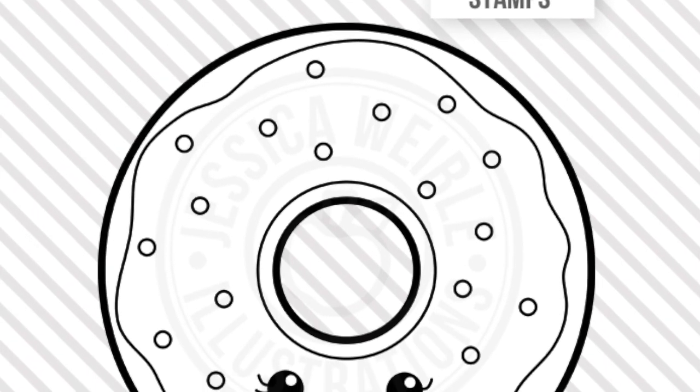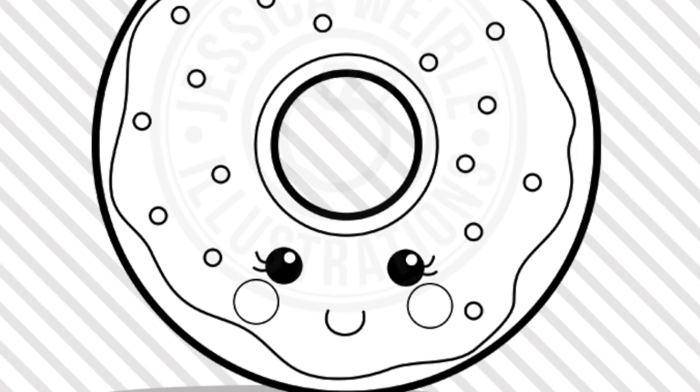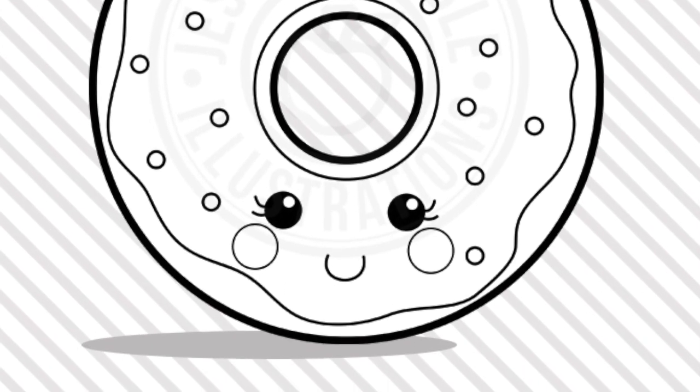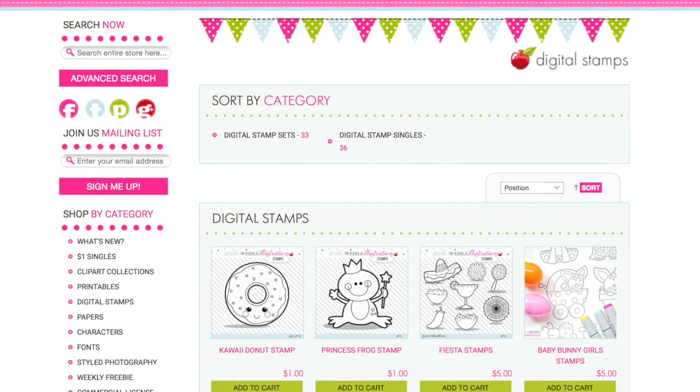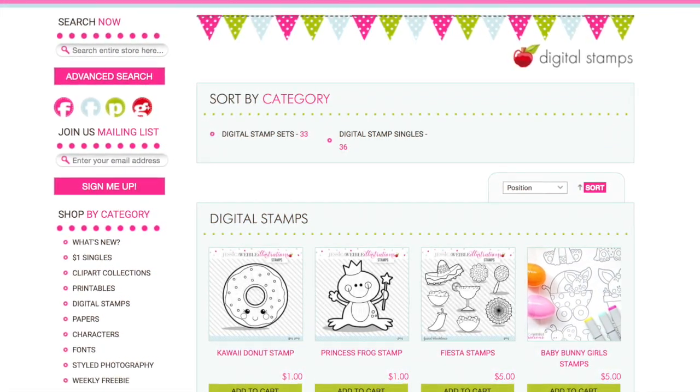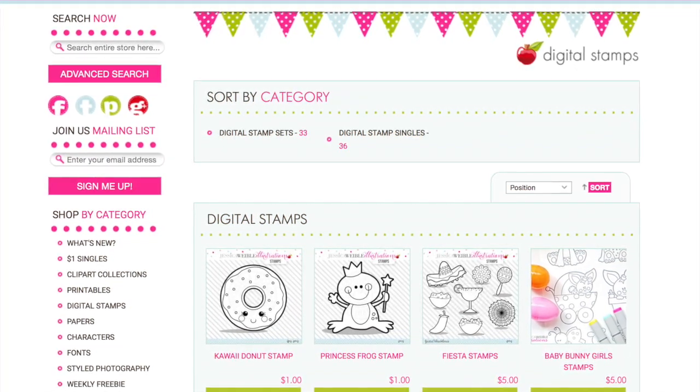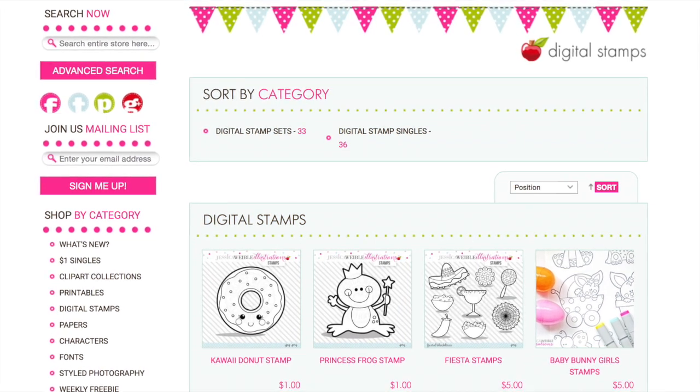In today's video, I am using the Kawaii Donut digital stamp by JW Illustrations. I think that this donut is just so adorable. JW Illustrations is an online shop owned by Jessica Weibel. Jessica creates these adorable digital stamps along with clip art, digital papers, fonts, and sometimes even cutting files.